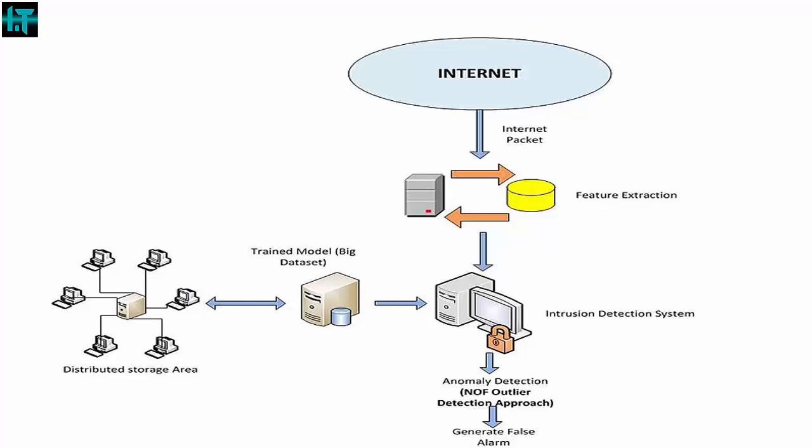While a firewall attempts to protect a network and prevent intrusion, an intrusion detection system could detect whether or not the network is under attack or has been breached. Intrusion detection systems serve three essential security functions: monitor, detect, and respond to unauthorized activity by company insiders and outsiders. IDS use policies to define certain events that, if detected, will issue an alert.